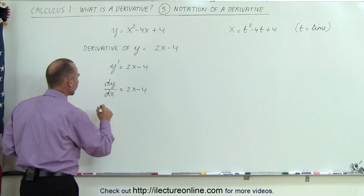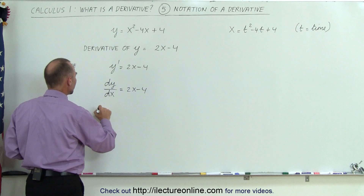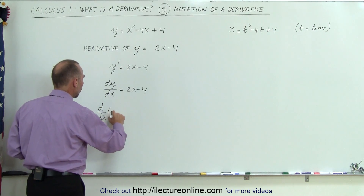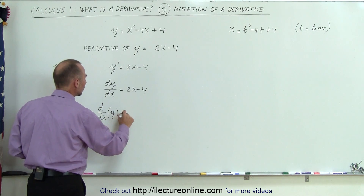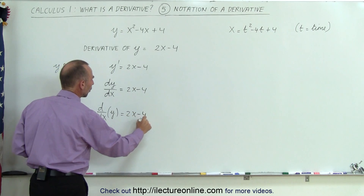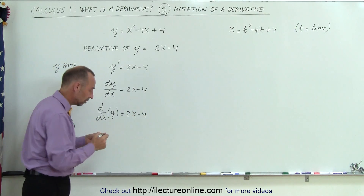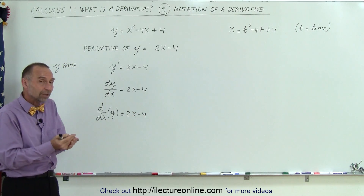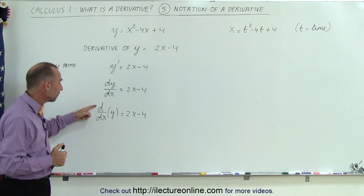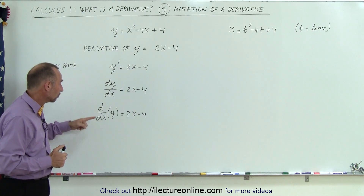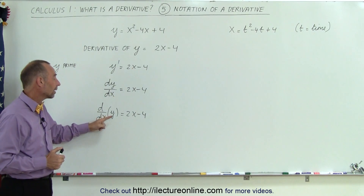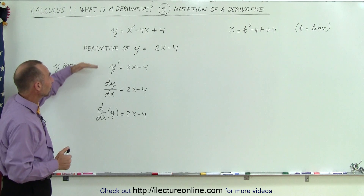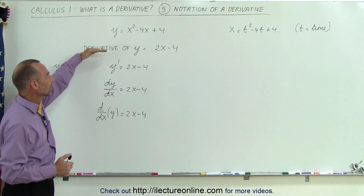Another way to write it is: d/dx of y, which is equal to 2x minus 4. It means exactly the same thing, just written a little differently. It's the derivative with respect to the variable x of y, which equals that.